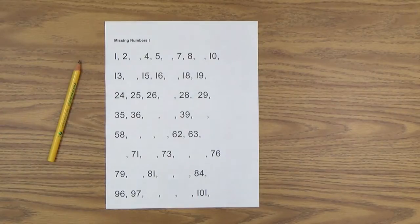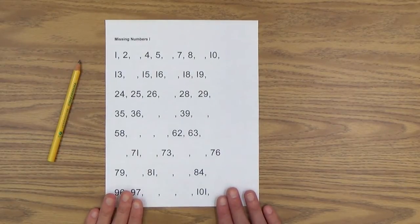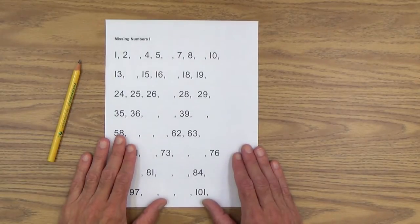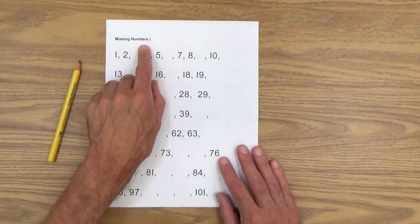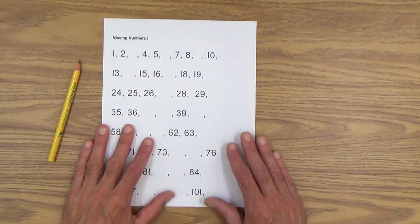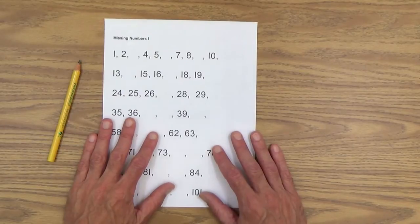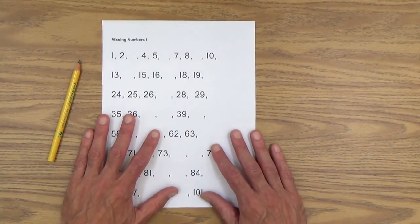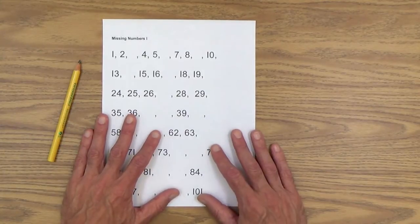And this activity is called missing numbers to 100. You remember we did this activity up to 20 and now we're going all the way up to 100. And I'll get into the specifics of this particular sheet in just a second here. And as you can see, it's called missing numbers one. I've made up three of these for you that you can work with, with your child. And of course, you just need to go to the printables section in the early gifted manual and you can make copies of these.